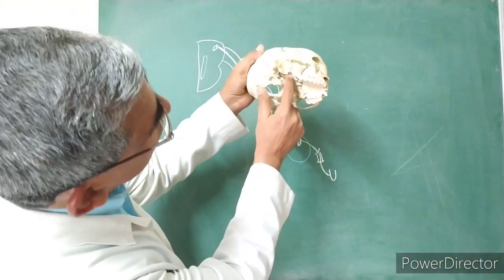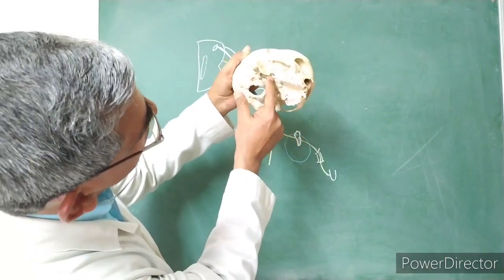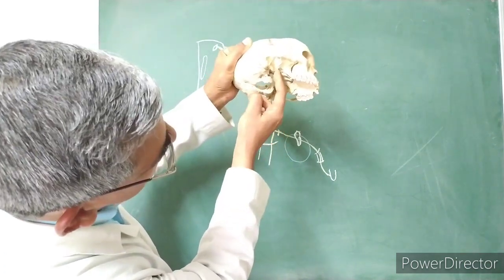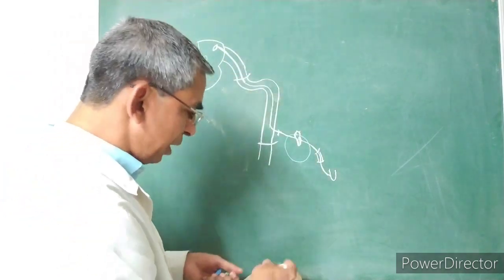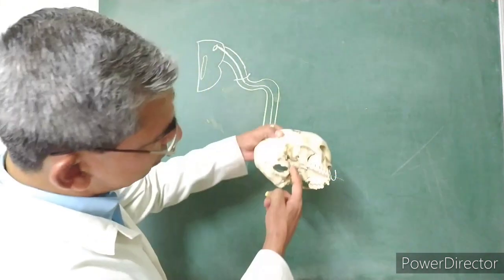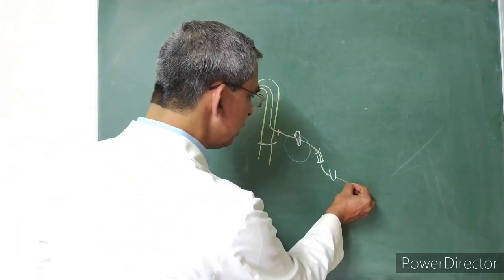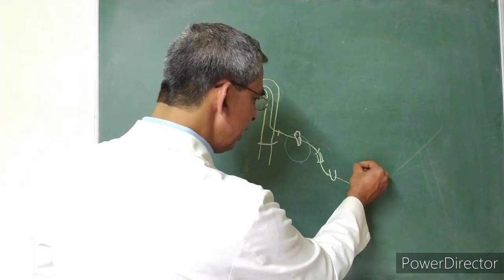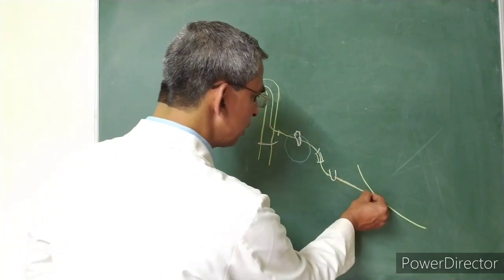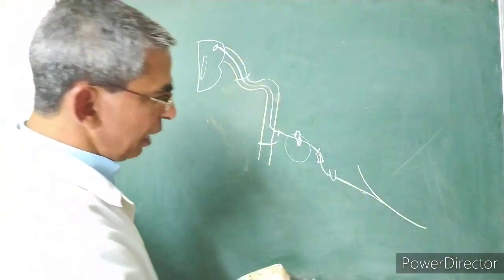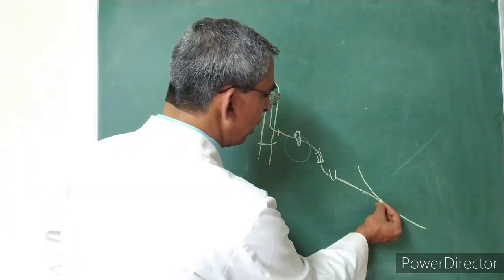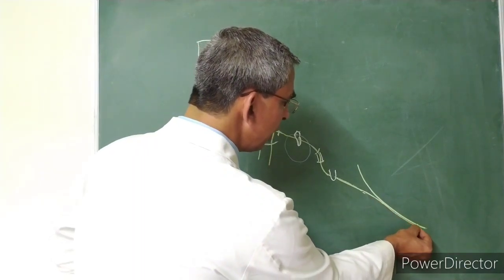From the spine of the sphenoid bone, the chorda tympani descends downward into the infratemporal fossa, where it unites with the lingual nerve at an acute angle. The fibers of the chorda tympani nerve then run through the lingual nerve.